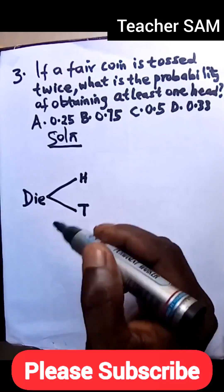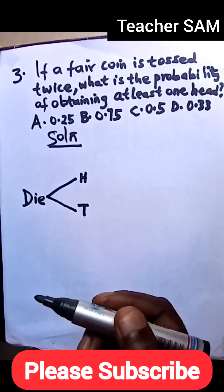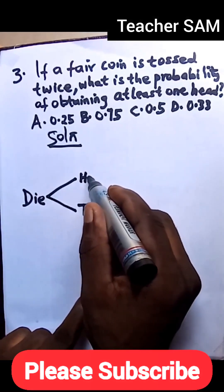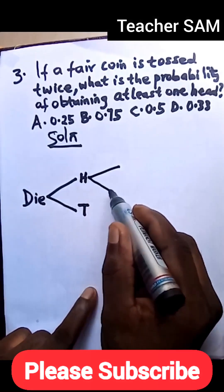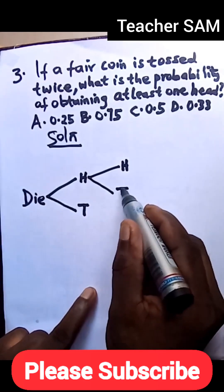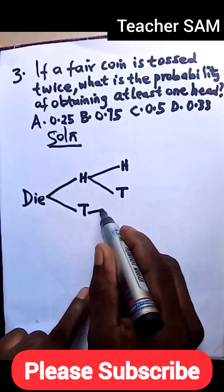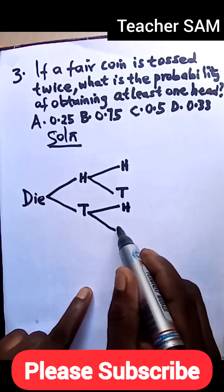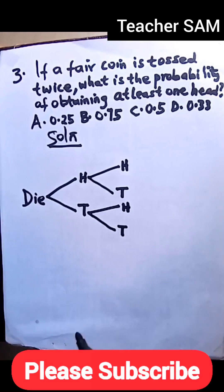So we do which we toss again. If we toss the second time, this head will give us a head and a tail. This tail as well is going to give us two outcomes: a head and a tail. So we have that.